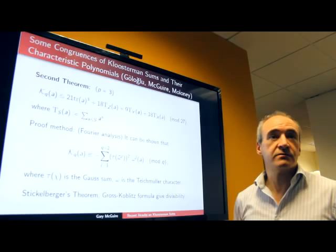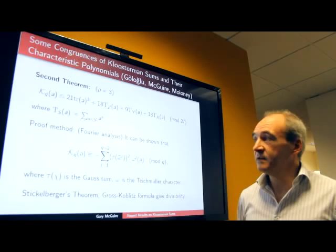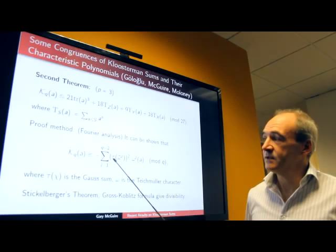Our second theorem is in the case of characteristic 3, and we have an expression for Kluisterman's sum itself, modulo 27. This improves on a previous paper we have, which is a modulo 9 result for the Kluisterman sum.